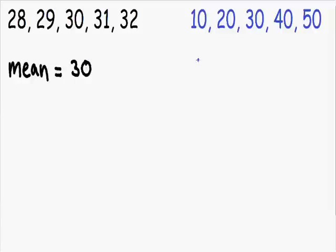If we took a look at the data set in blue on the right, we have 10, 20, 30, 40, 50. If we took the average or the mean of this data set and added all these numbers together and divided by 5, we would also have a mean of 30. So if we just looked at the mean of both of these data sets, we would think they're exactly the same because they both have an average of 30. But clearly just by looking at them, we know that this isn't true.